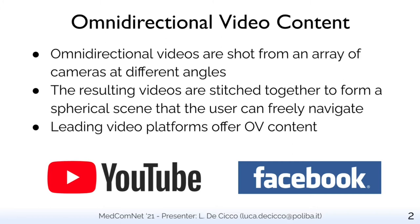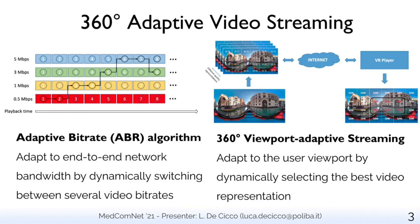To produce an omnidirectional video, a live scene is first captured at different angles, usually using an array of cameras forming a circle. This way, a number of videos is produced with different viewpoints. During post-production, those videos are stitched together to form a spherical scene that the user can freely navigate, typically using head-mounted displays, by just moving their heads. Today, leading video platforms such as YouTube and Facebook are delivering 360 video content to their users.